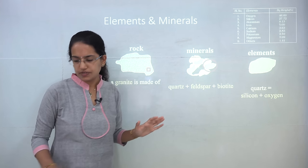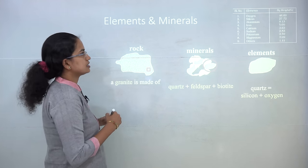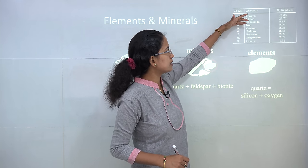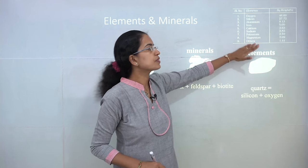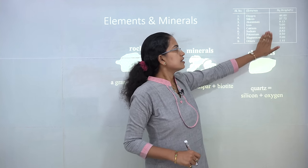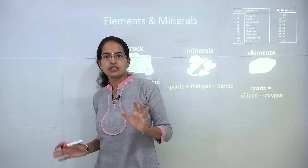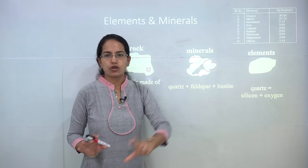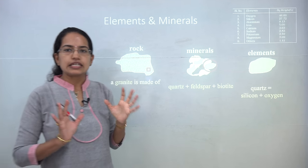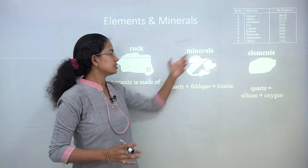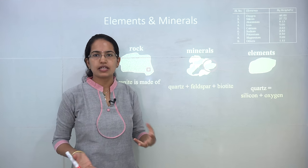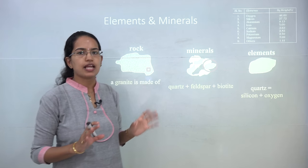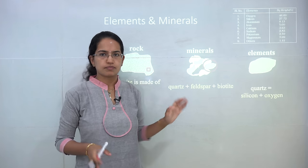Quartz is a mineral which is made up of silicon and oxygen. On the Earth's crust, 98% is made up of 8 basic elements: oxygen, silicon, aluminum, iron, calcium, sodium, potassium, and magnesium. These 8 elements constitute 98% of the Earth's crust. This diagram helps us understand that each and every rock is made up of minerals. In simple terms, a mineral is a naturally occurring substance that has a fixed chemical and physical property.